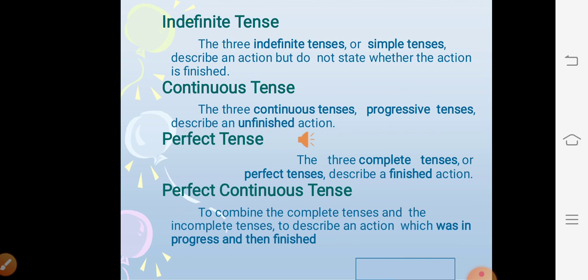The three indefinite or simple tenses describe an action but do not state whether the action is finished. The three continuous or progressive tenses describe an unfinished action. The three perfect or complete tenses describe a finished action. The perfect continuous tense combines complete and incomplete tenses to describe an action which was in progress and then finished.